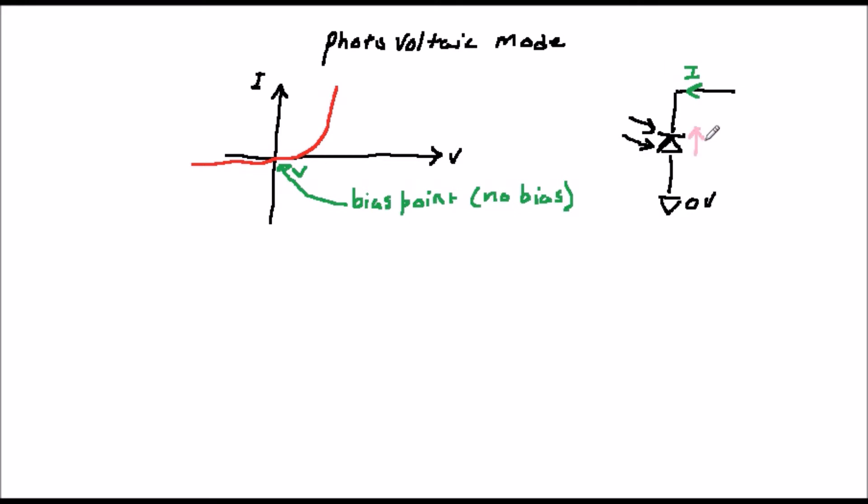Because both voltage and current are present, power is being developed, and this is why this mode is useful for electricity generation, although the efficiencies of typical solar cells are typically very low.